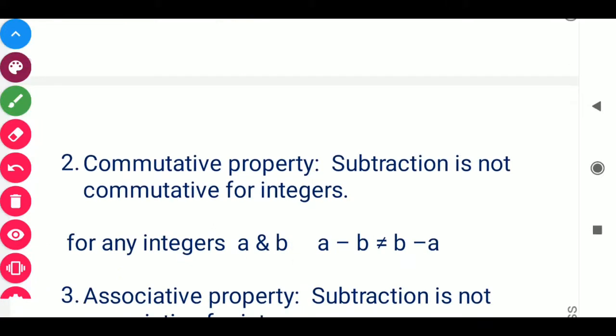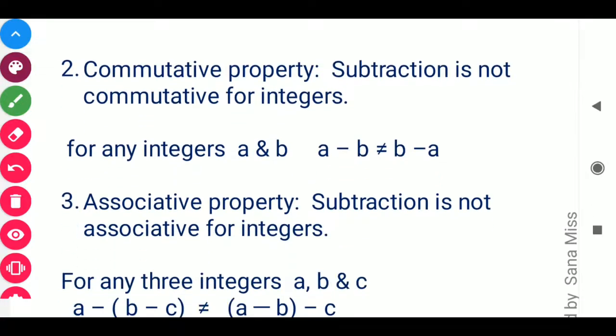Moving to commutative property. As seen in the previous video, commutative property was true for addition, but here subtraction is not commutative for integers. For any integers a and b, you cannot write a minus b equals b minus a — that is totally wrong. For example, 5 minus 3 gives positive 2, but reversing gives a completely different answer.